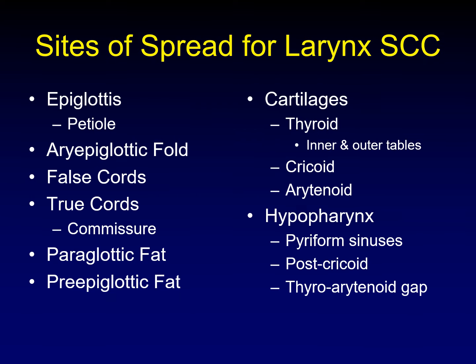These are the sites of spread that we're about to discuss: the epiglottis and its petiole, the aryepiglottic folds that connect the epiglottis to the rest of the supraglottis, the false and true cords including the commissure, and the paraglottic and preepiglottic fat pads.